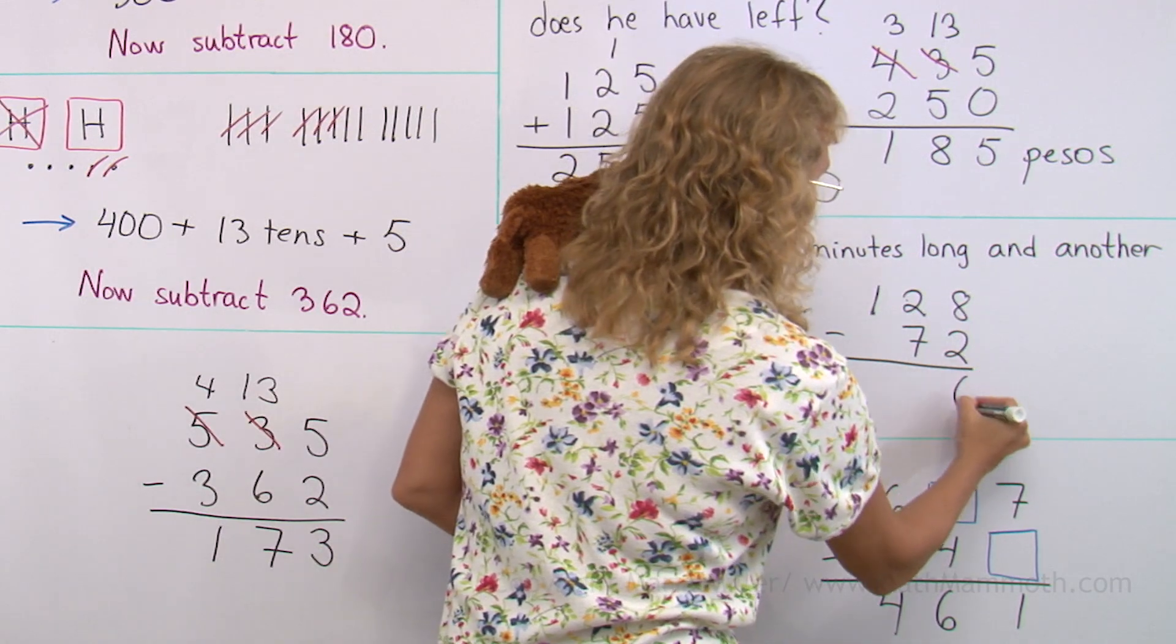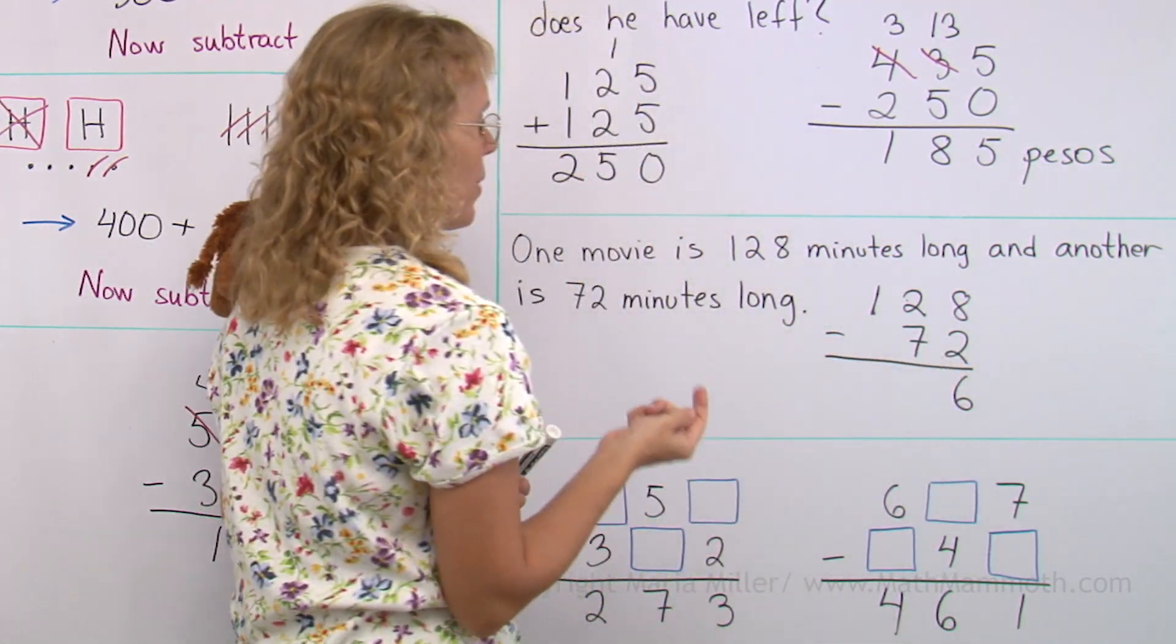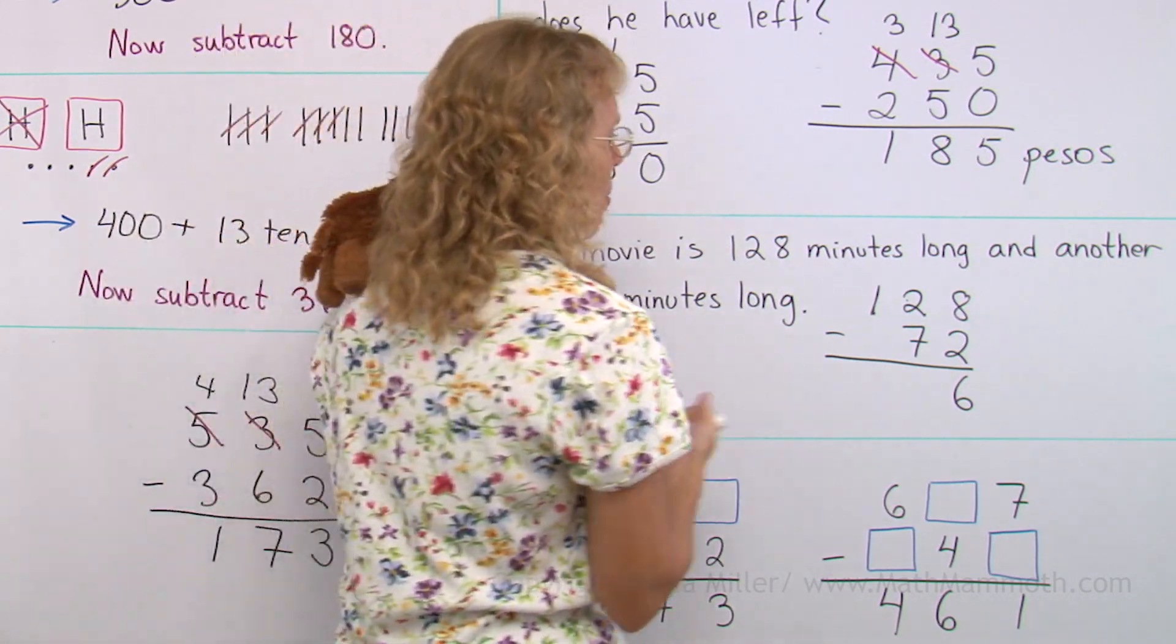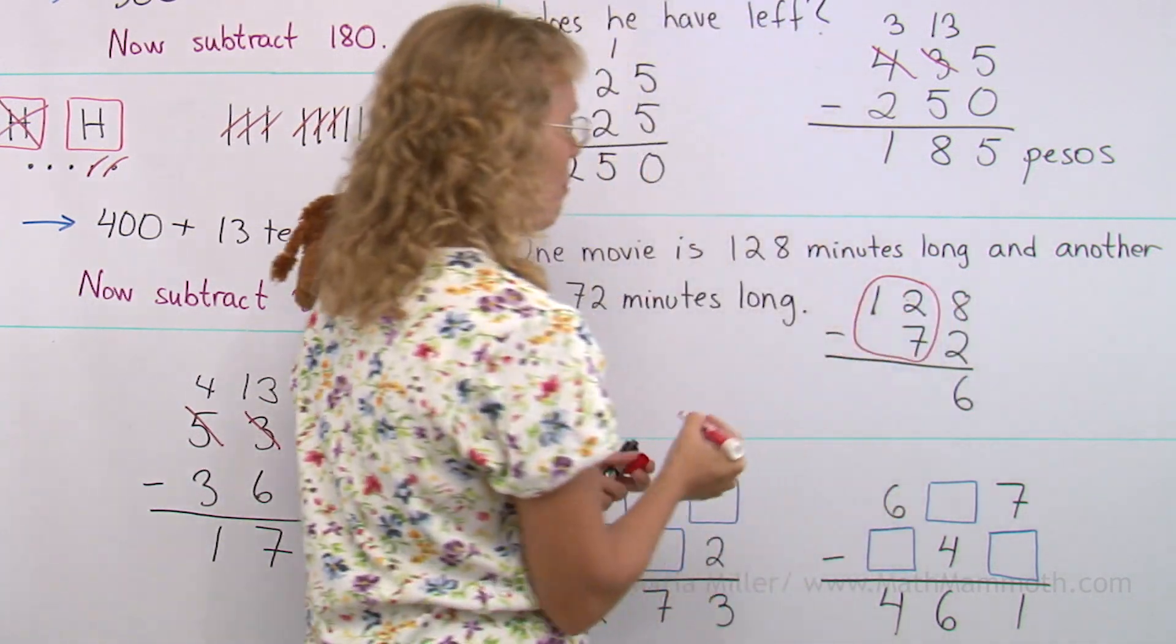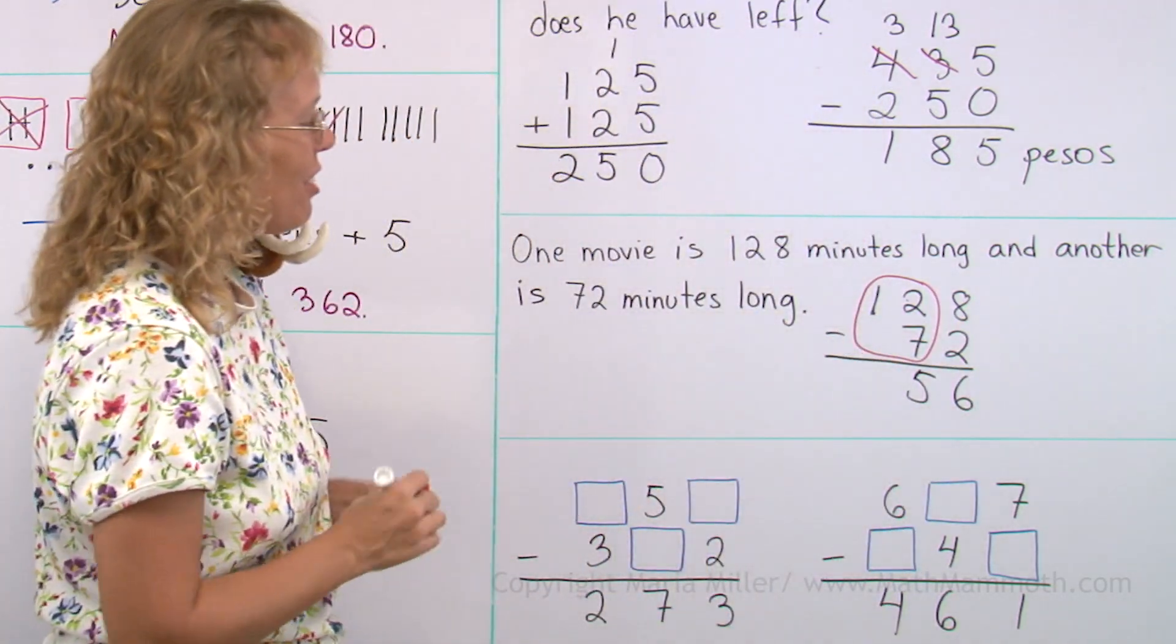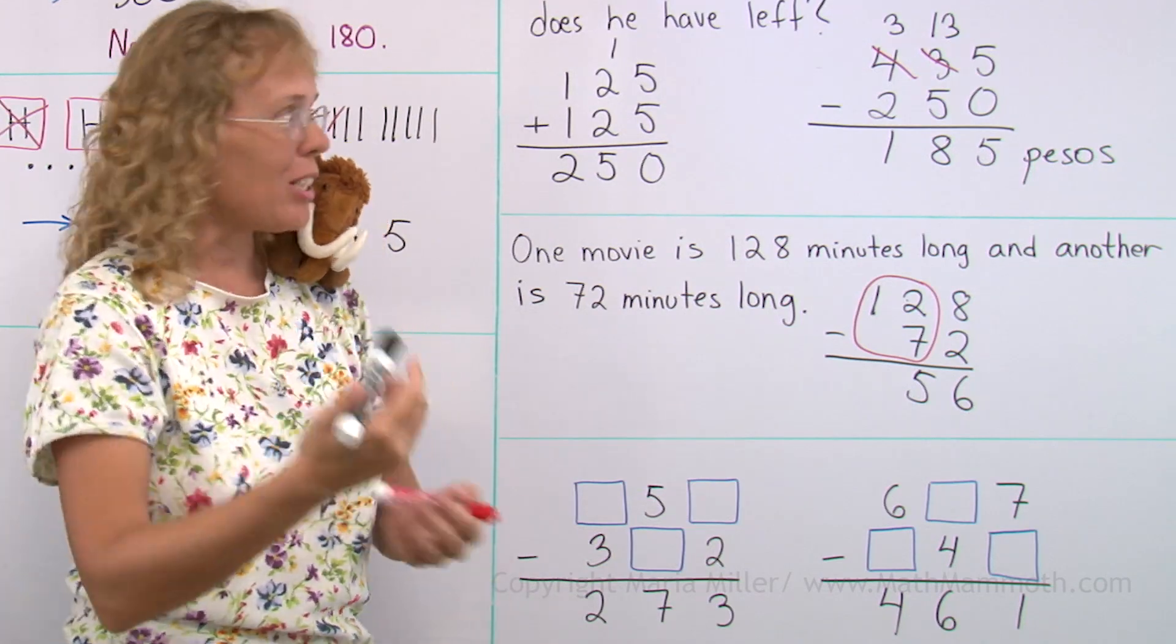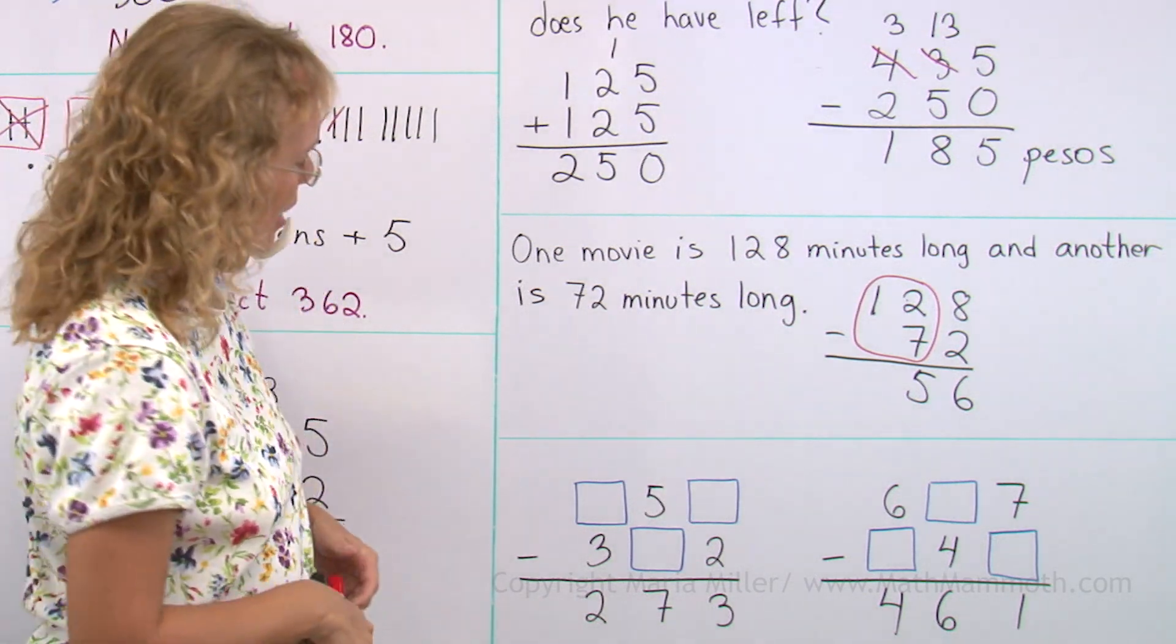Okay, 128 and then 72. Eight minus two is six, and now we're here - two minus seven, I cannot subtract, so I need to regroup, right? But I can think of this as, look, it's like 12 minus seven here, so I'll just solve that. I won't regroup as such, just 12 minus seven equals five, and it is all done. 56 minutes longer. And of course you could also ask an addition question - how long are these two movies together? But let's go on to these puzzles.